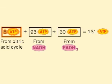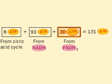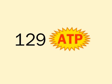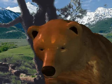So the final yield: 8 plus 93 plus 30 equals 131. Even when we take away two ATPs needed to activate the palmitate to palmitoyl-CoA at the beginning, there are still 129 ATPs left. Remember that these numbers are approximate. If you want to hibernate, putting on a lot of fat is a good idea.